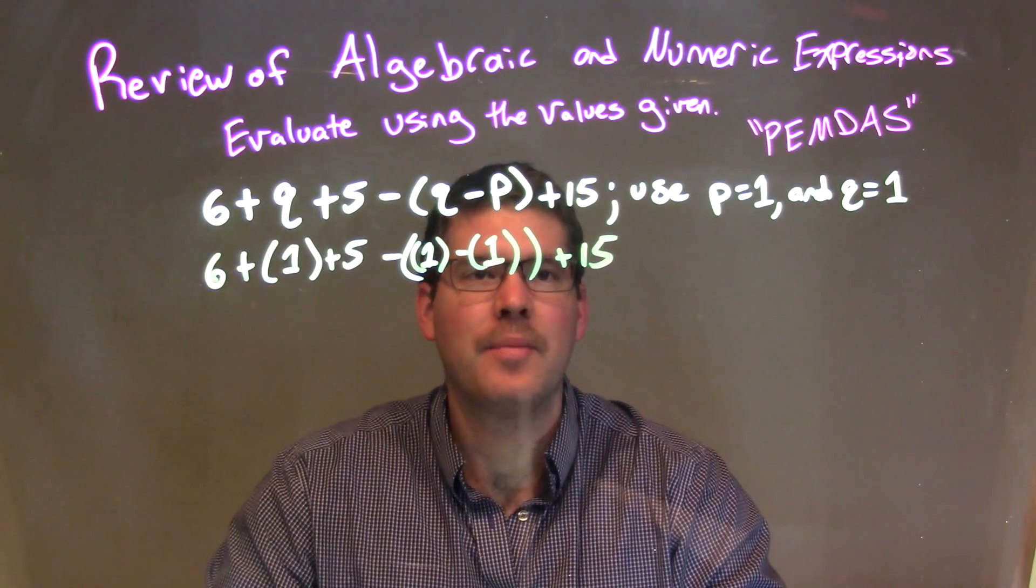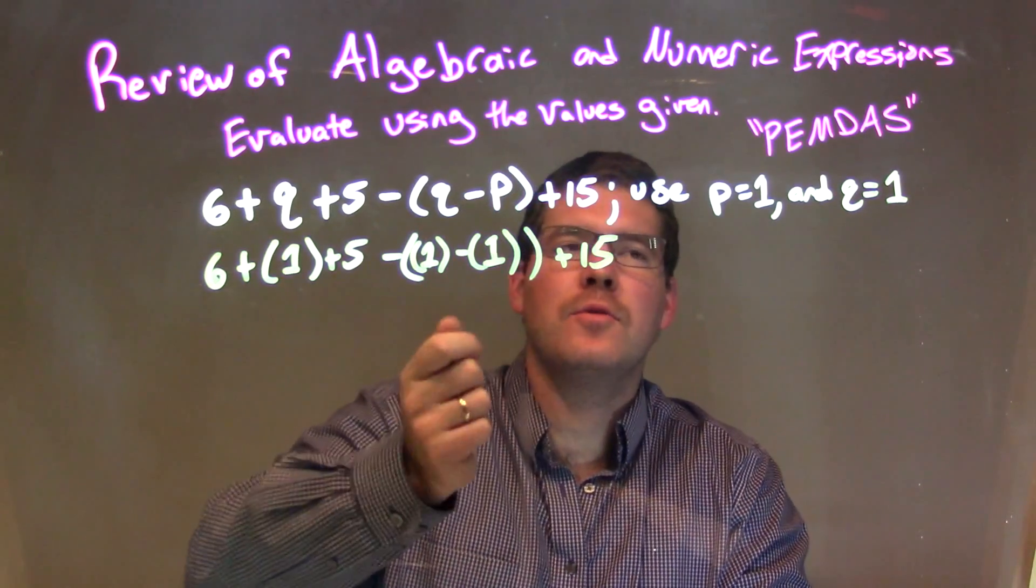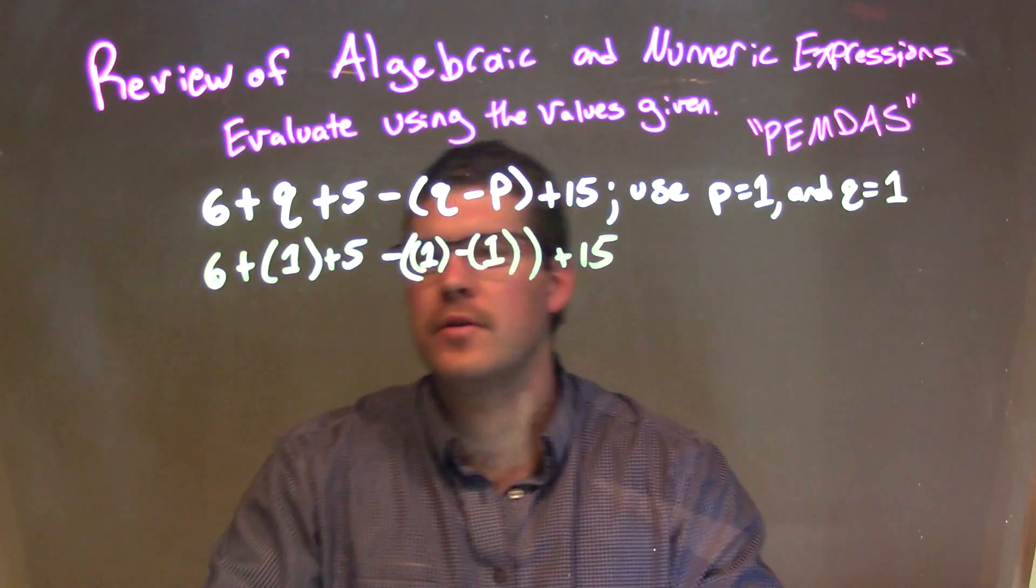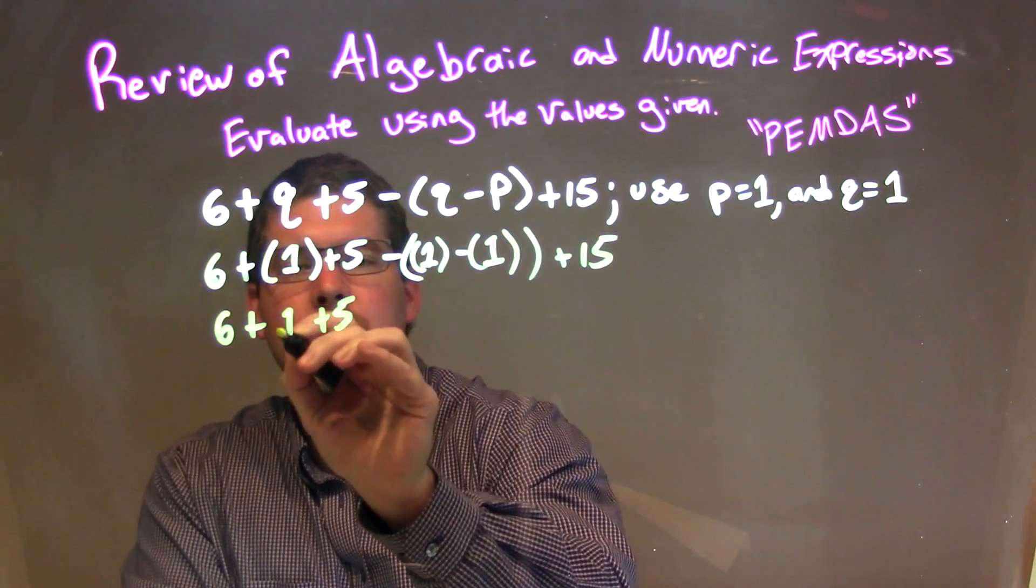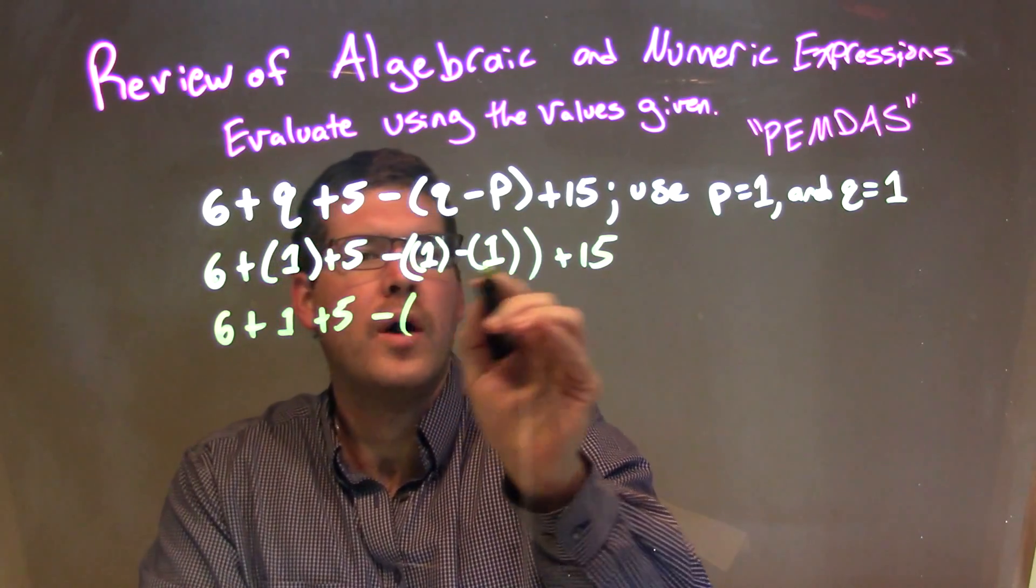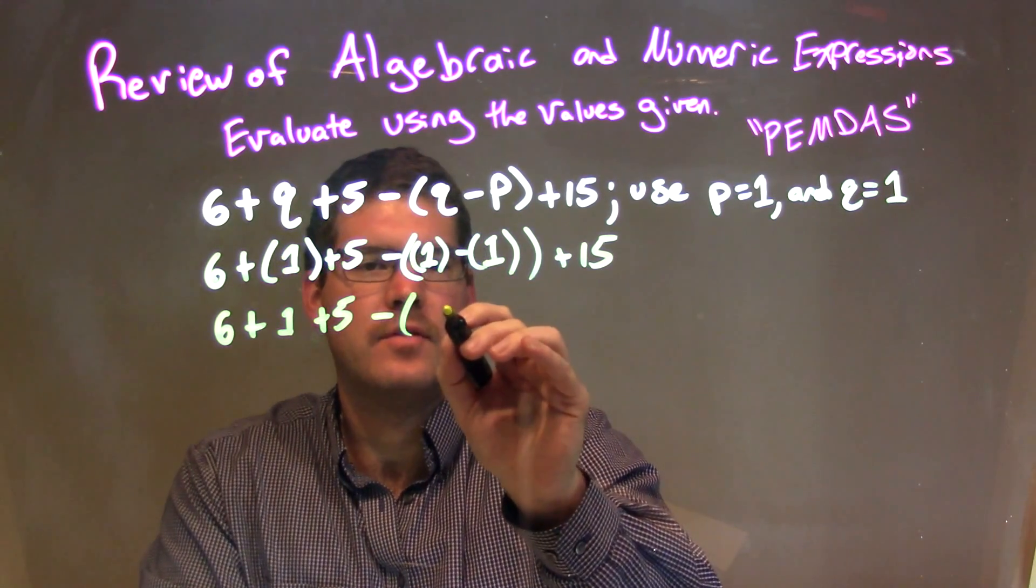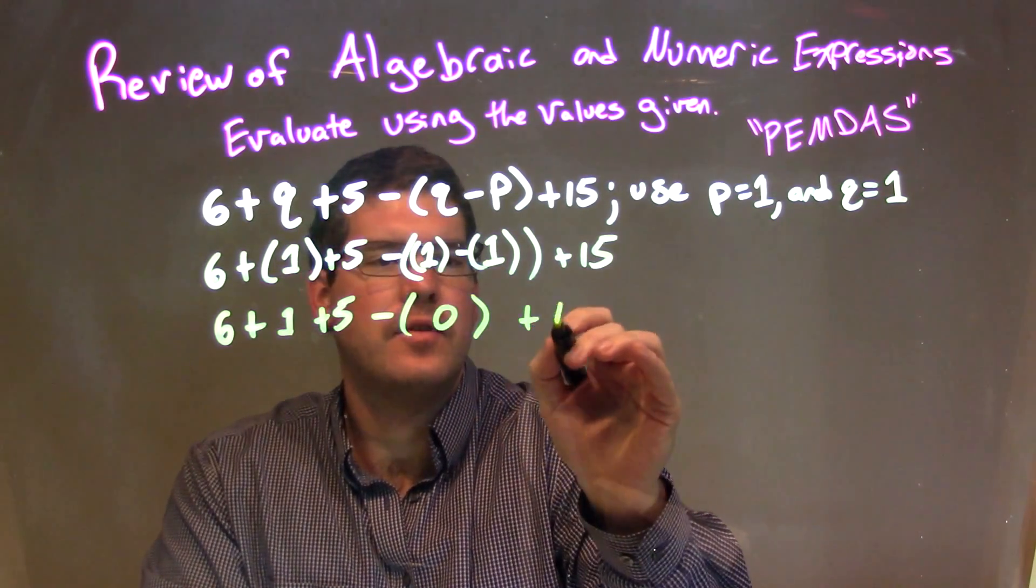Now we want to simplify. We're going to use PEMDAS, parentheses first. So, 1 minus 1 in the big parentheses is just 0, plus 15.